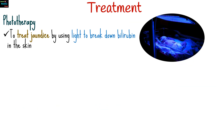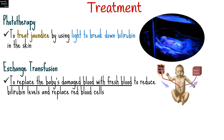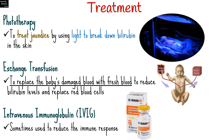Treatment includes phototherapy to treat jaundice by using light to break down bilirubin in the skin; exchange transfusion in severe cases, to replace the baby's damaged blood with fresh blood, reducing bilirubin levels and replacing red blood cells; and intravenous immunoglobulin.